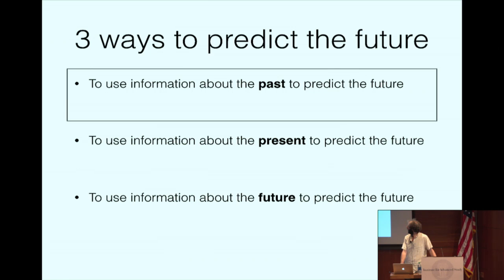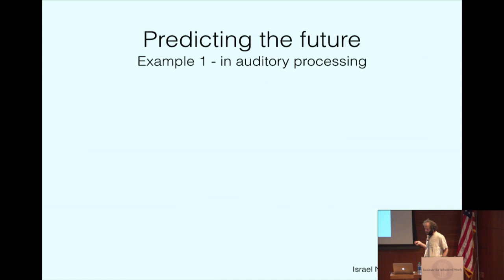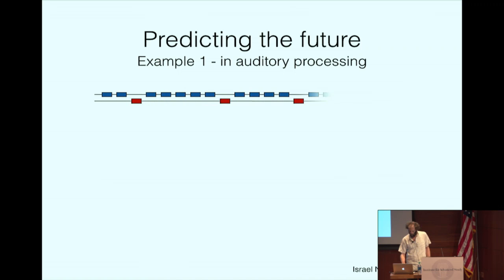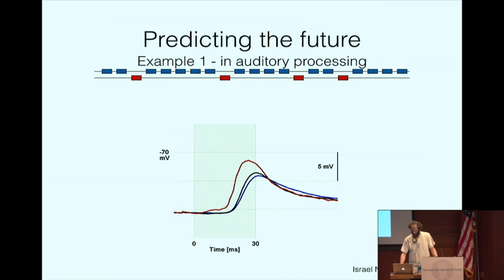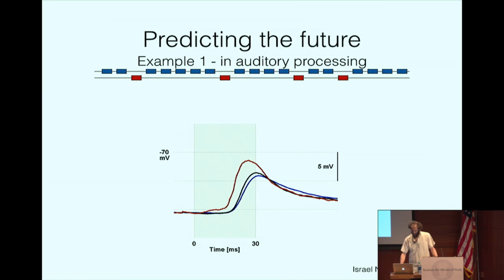The first example is how the brain uses information about the past. The example is from the main research of Ellie Nelkin's lab, which is one of my advisors. I need you to listen to this for a bit. There are two sounds being played. One of them is being played many times. It's a common sound. And the other sound is a rare sound. In this case, it appears randomly, but at the probability of 5%. And they check how neurons in the auditory cortex respond to this.